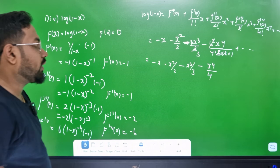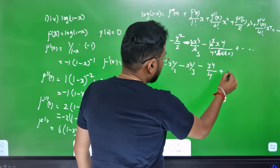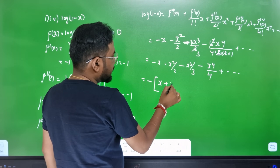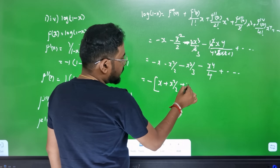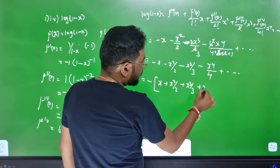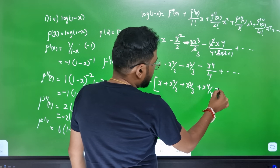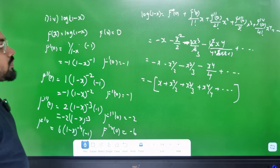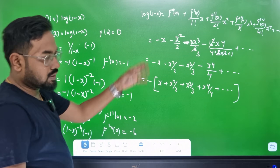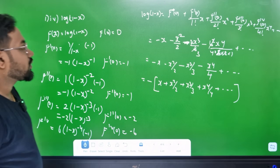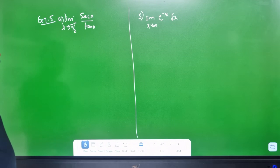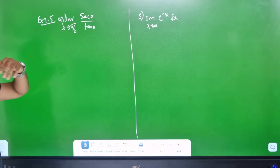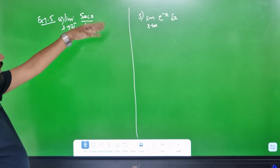So the result is: minus x minus x²/2 minus x³/3 minus x⁴/4 minus dot dot dot. Note: your textbook may show it with a minus sign outside. This sum is very important.